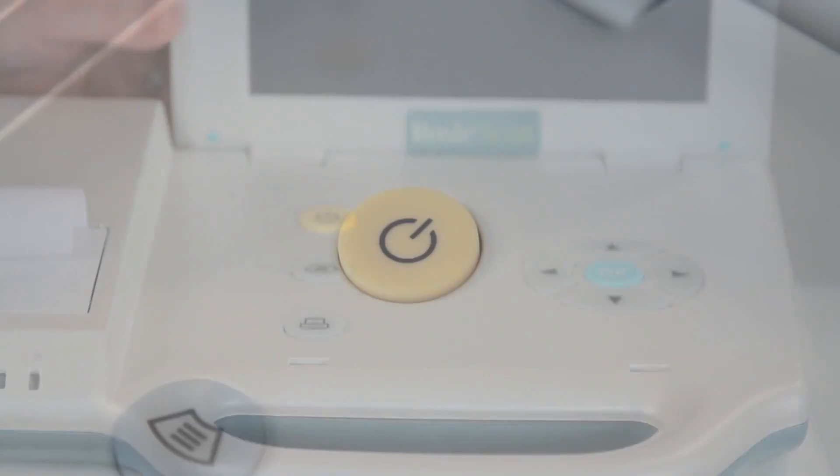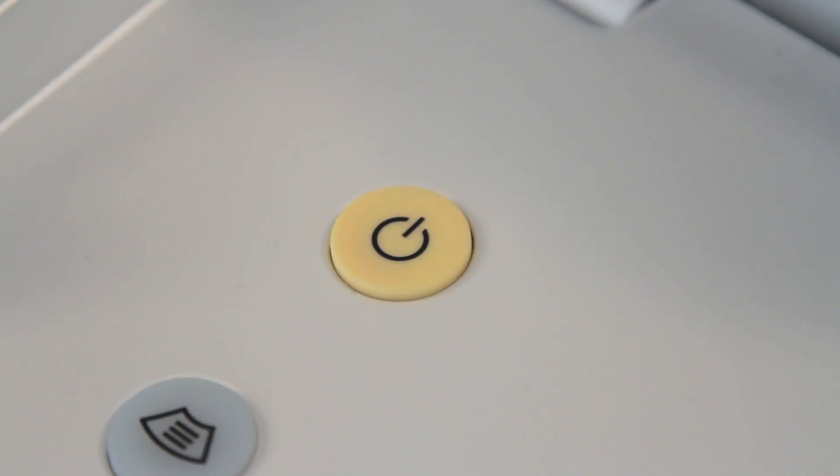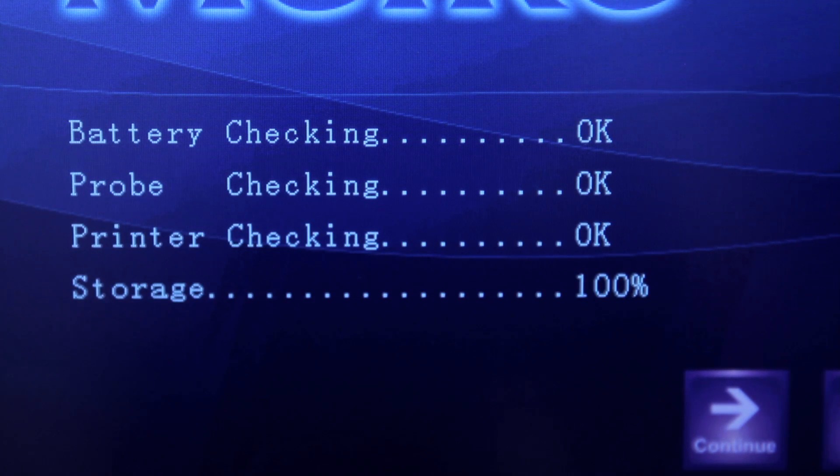To turn on the device, press the power key. The device will automatically check the battery level, printer, probe connection, memory capacity, and screen.